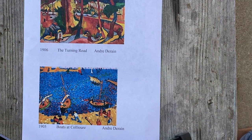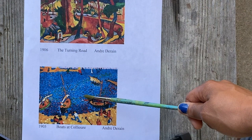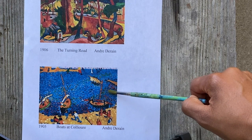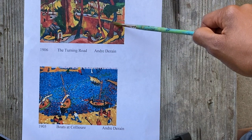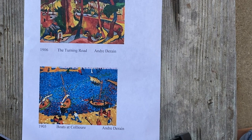Let's look at another example. Here are two landscape Fauvist art styles — The Turning Road by Andre Duran and The Boats at Collier. As you can see, he did a lot of fun wild brush strokes using a rich blue to represent the waters. And here he uses even some reds and blues in the trees. It's not exactly realistic, but the color really pops and stands out and it's super vibrant.